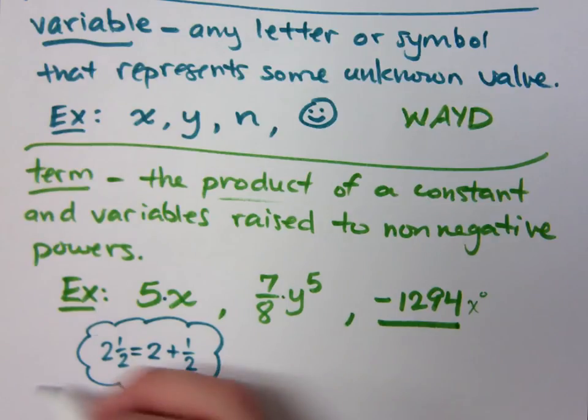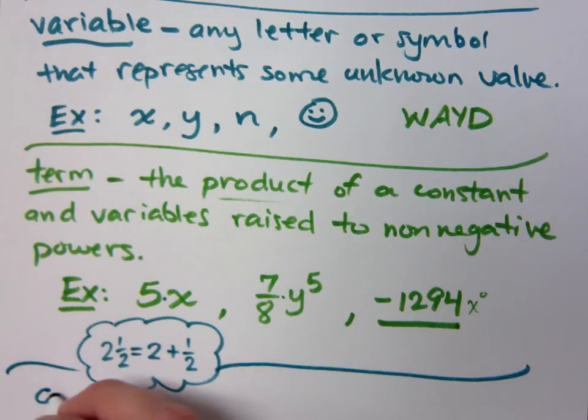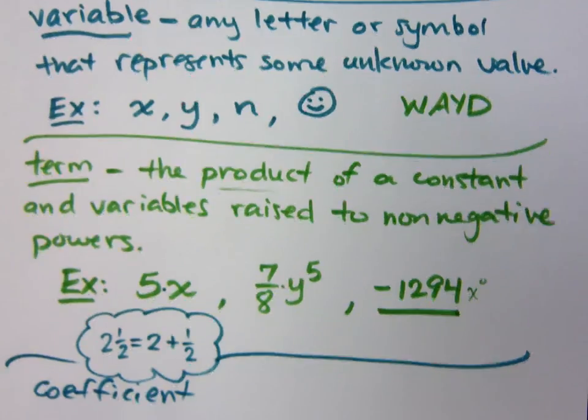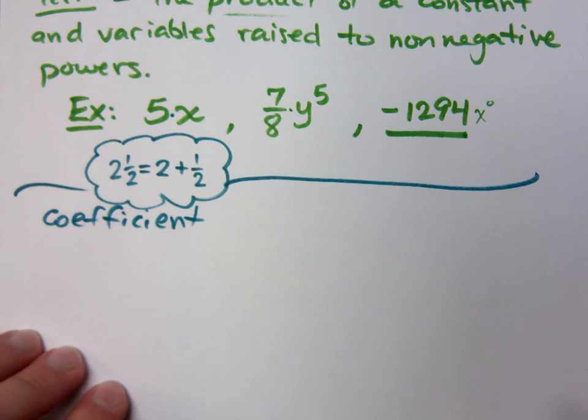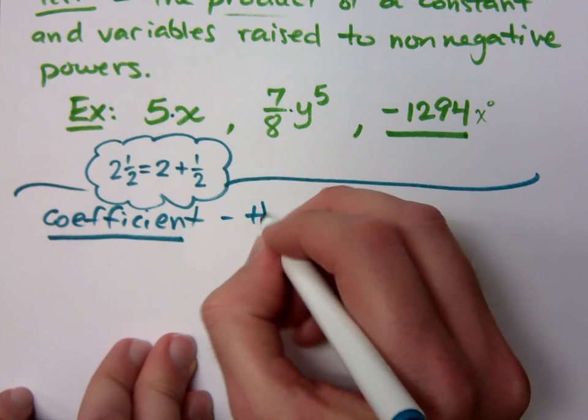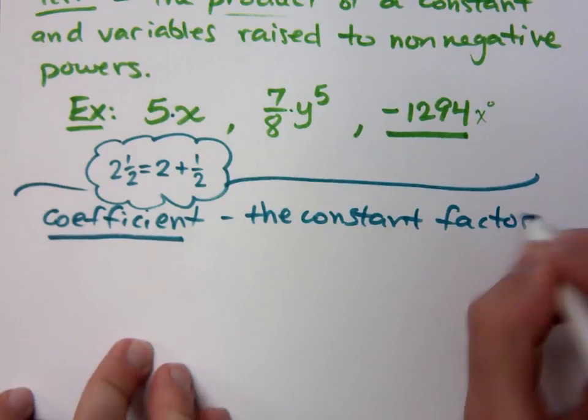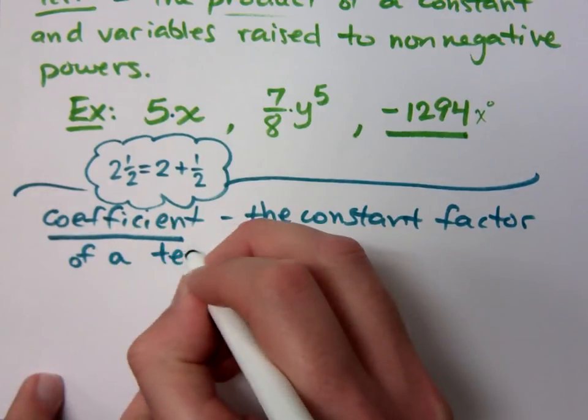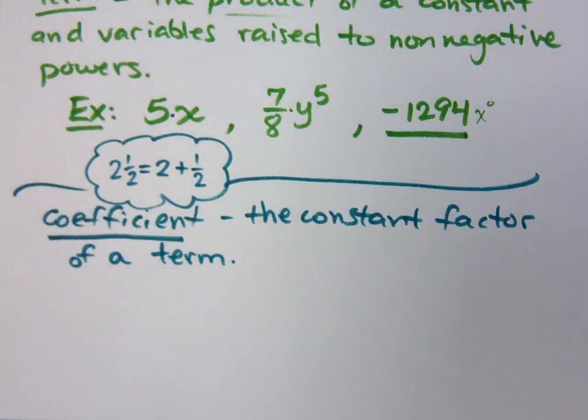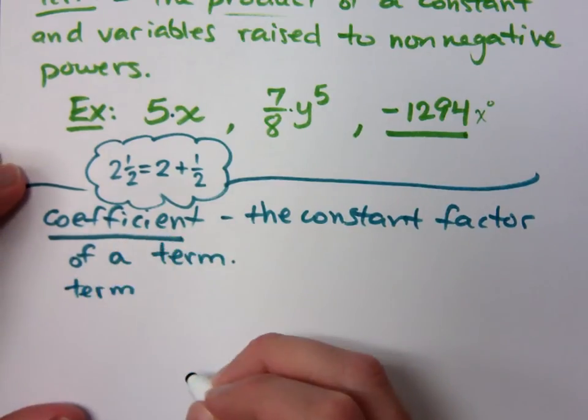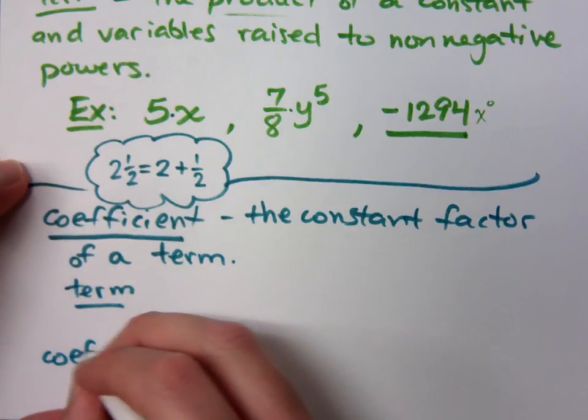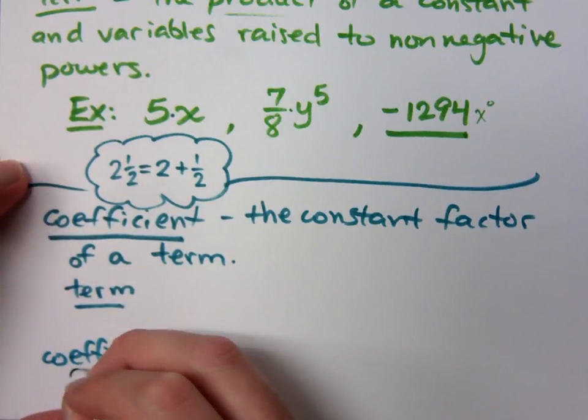Well, when we're talking about terms, we want to talk about the coefficient of a term. Now, right now, it's just a matter of identifying a certain piece of a term, but later on, it's going to have much more meaning to us, especially when it comes to graphing. So the coefficient is just the constant part of a term. It's the constant factor of a term. So what I want to do here, is I just want to list some terms, and I want you to identify what is the coefficient, what's the constant part of it. So we're going to make a list of terms, and then you're going to tell me what is the coefficient.